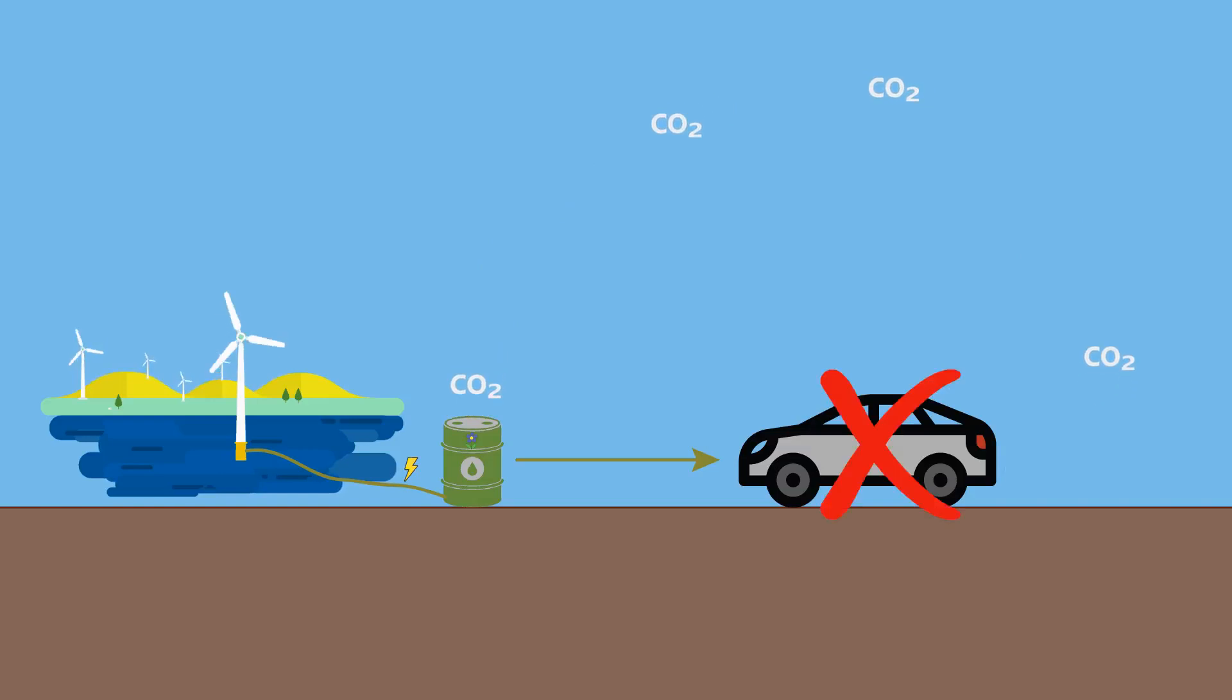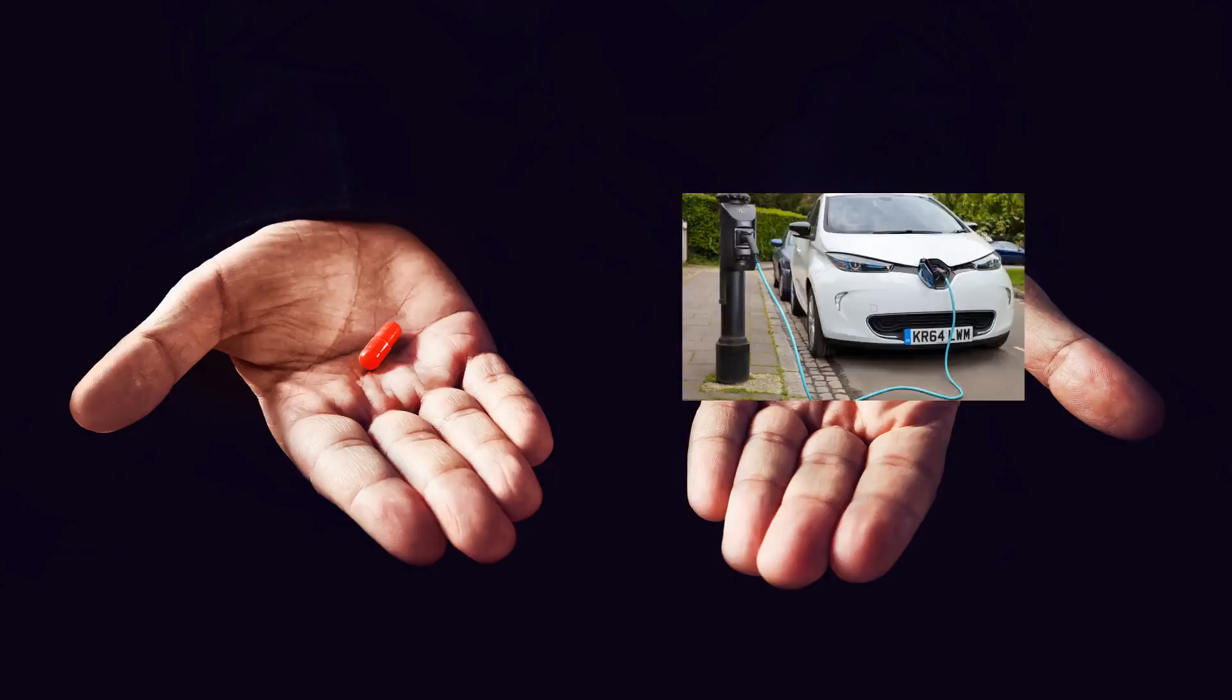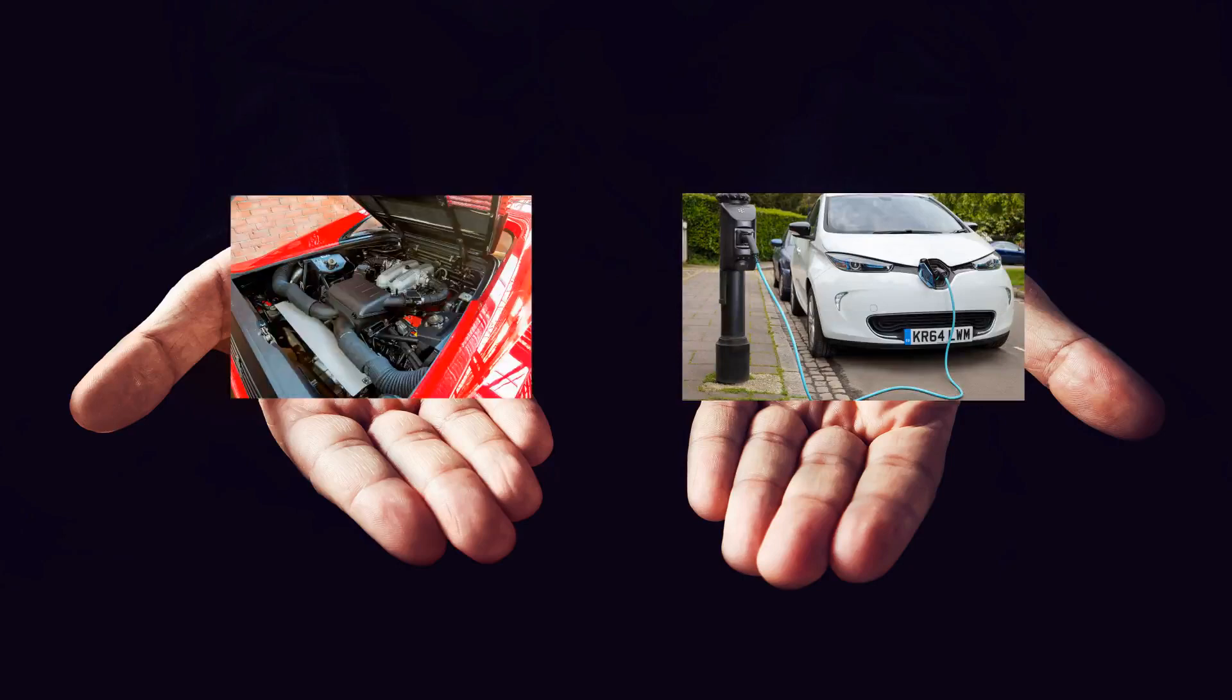So instead of outright banning petrol cars, a better move would be to ban oil pumped from the ground. The result would be the same – no new carbon emissions either way, and people would have the choice between going with an electric car, or to use green synthetic gasoline.